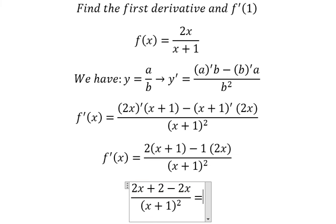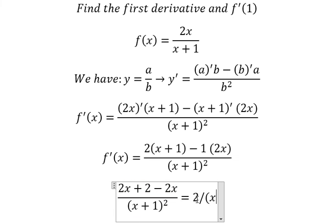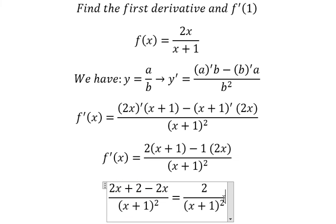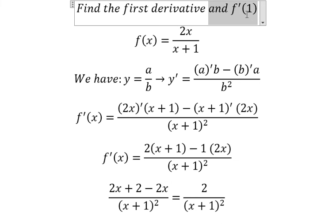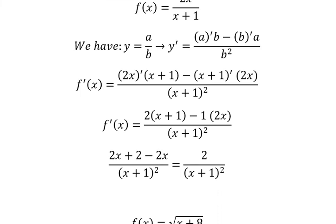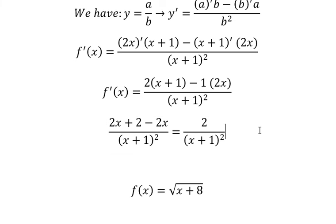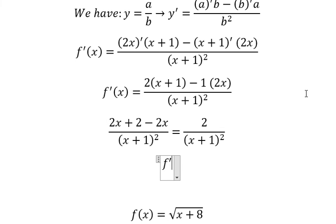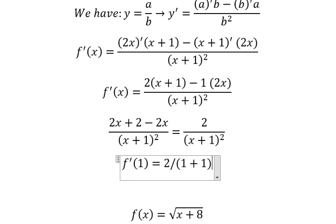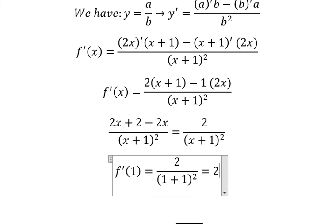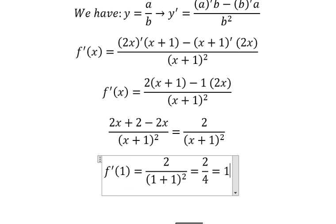And now we will have 2 over (s plus 1) to the power of 2. We put s equal to 1 in here, so we have 2 over 4, because 1 plus 1 is 2, and 2 to the power of 2 is 4. We simplify this and we have 1 over 2.